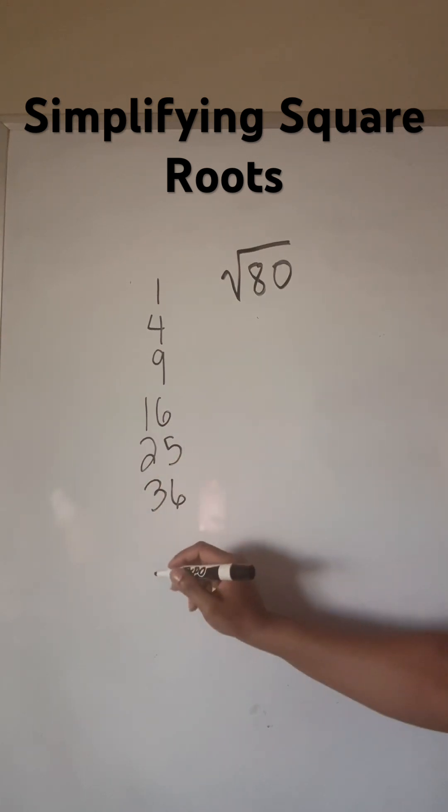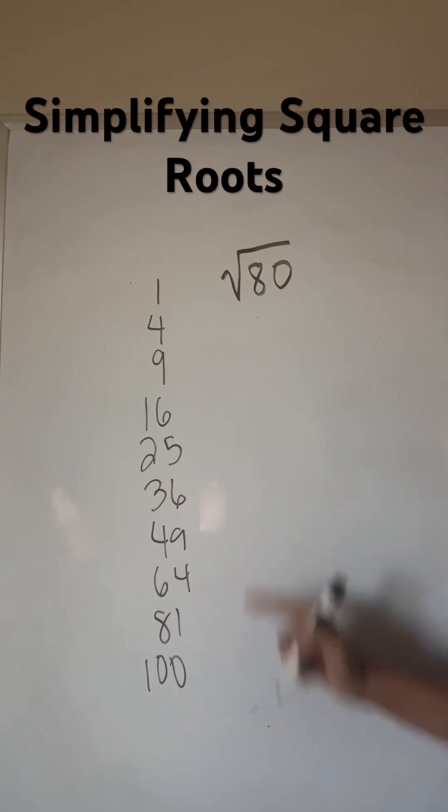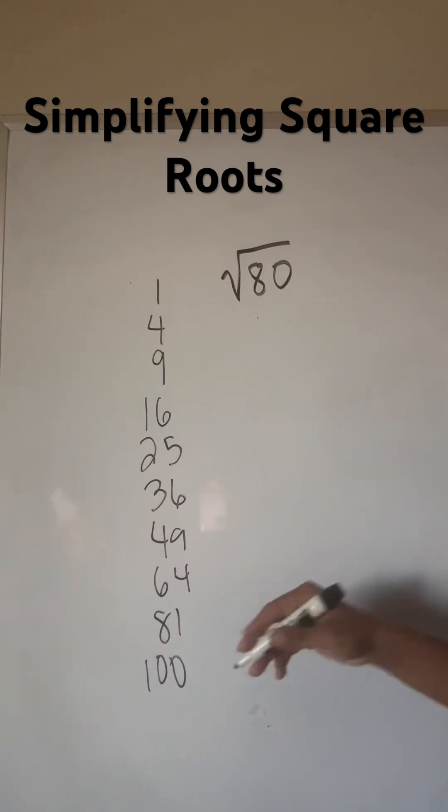Your perfect squares are 1, 4, 9, 16, 25, 36, 49, 64, 81, 100. Do you know how I'm getting those numbers? That's just 1 squared, 2 squared, 3 squared, 4 squared, 5 squared, 6 squared, and so forth.